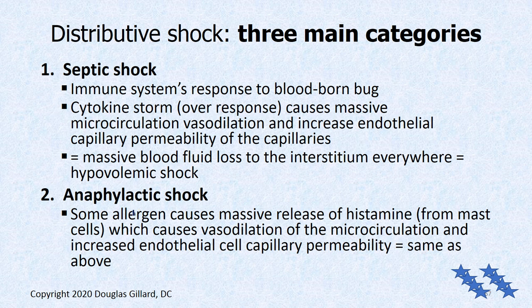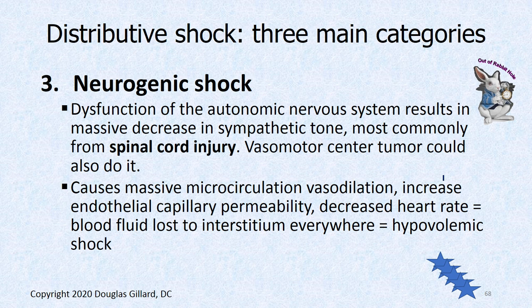Anaphylaxis is the same mechanism but instead of a bug, it's an allergen or antigen. Something you're allergic to has gotten into your body, mast cells release histamine everywhere. Histamine causes a relaxation of the tone of arterioles and venules, overloading the capillaries, making capillary pressure too high and capillary permeability too high. The blood fluid dumps into the interstitium all over the body — there goes your blood volume and you go into shock.